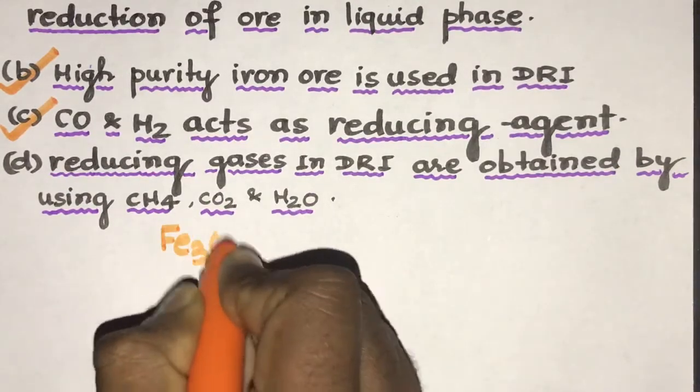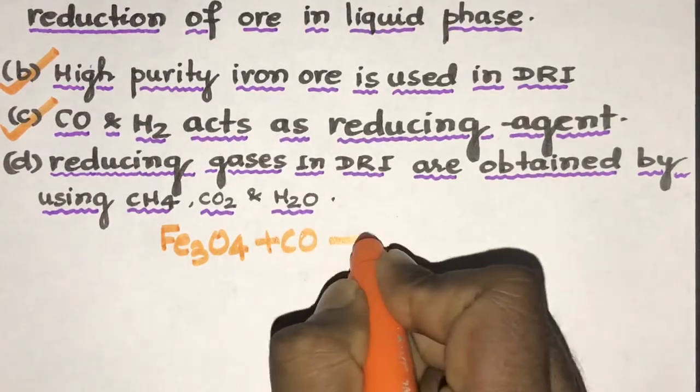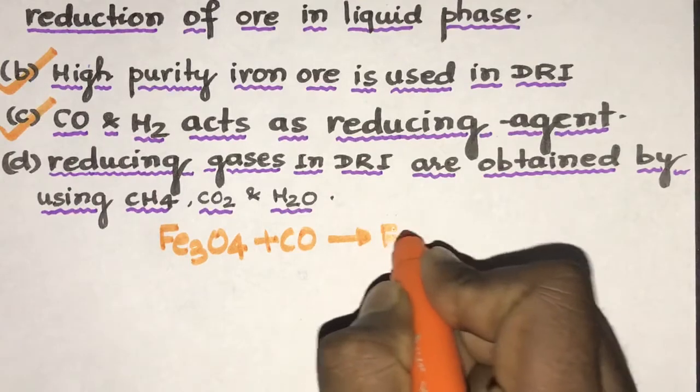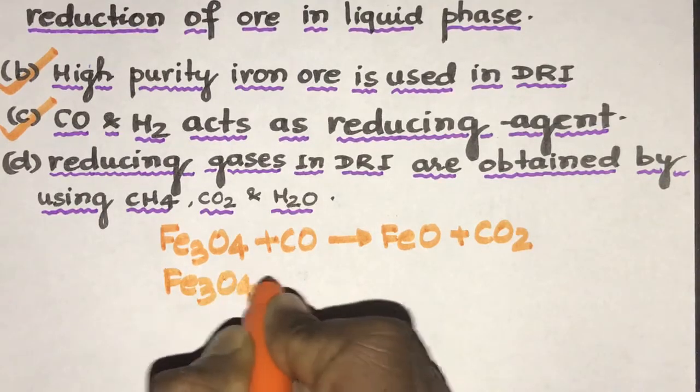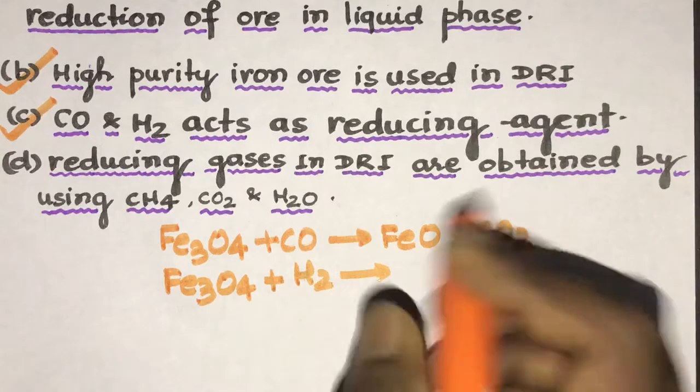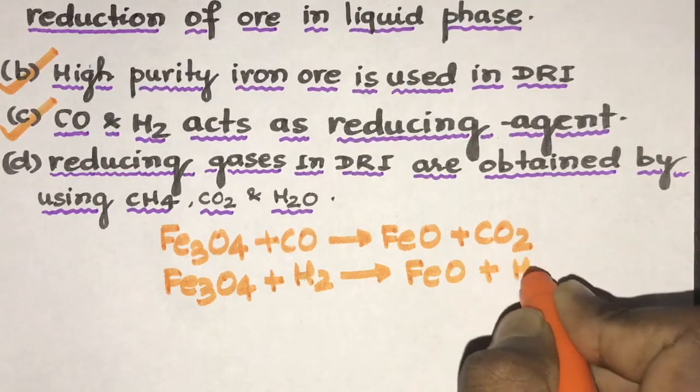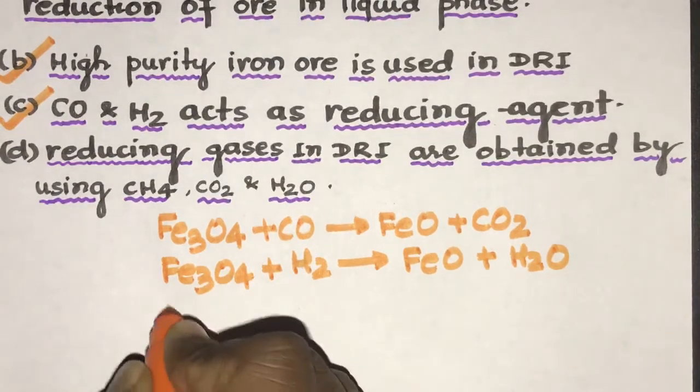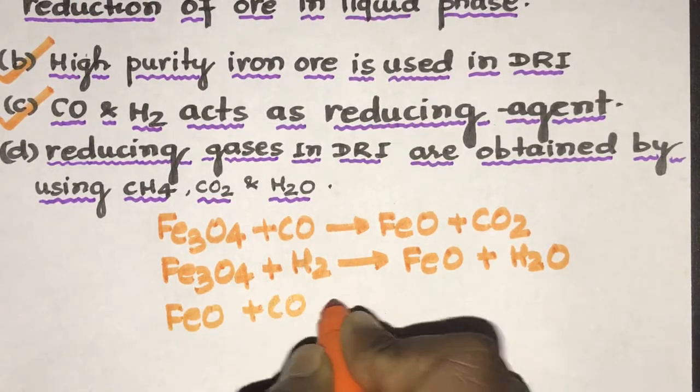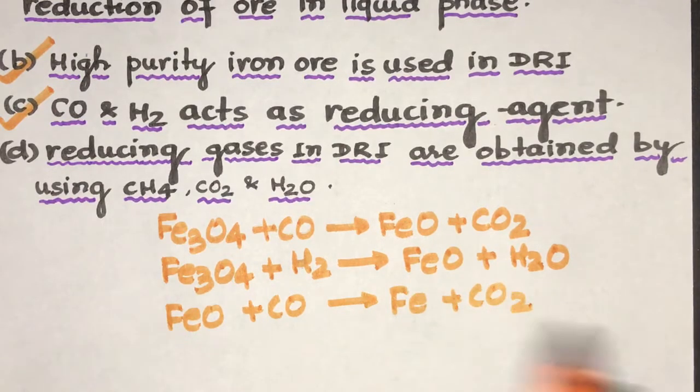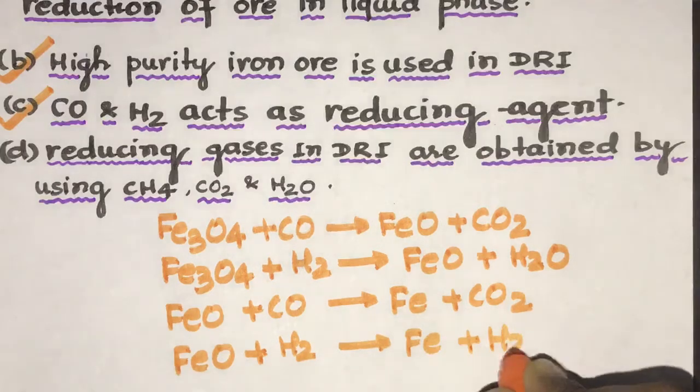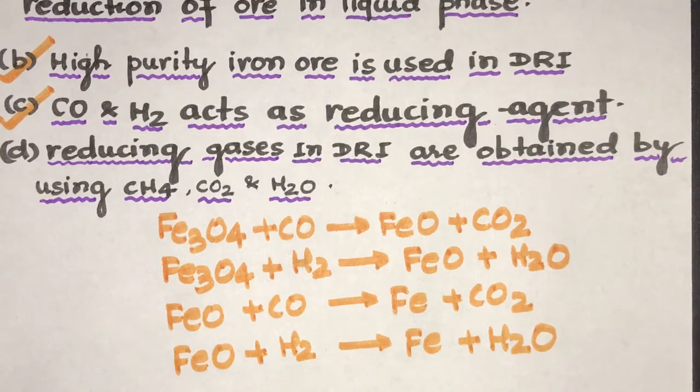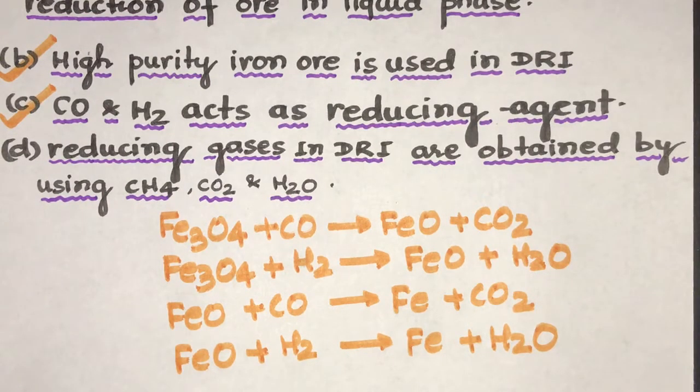So here, if this is Fe3O4 and CO is a reducing agent, then it will form FeO solid plus CO2 gas. Similarly, Fe3O4 that is the magnetite in presence of hydrogen gas will form FeO solid plus H2O gas. Now, this FeO is further reduced by carbon monoxide to Fe and CO2. Similarly, for FeO, it is reduced by hydrogen gas forming Fe and H2O. So these are the basic reduction reactions that occur in a DRI process.